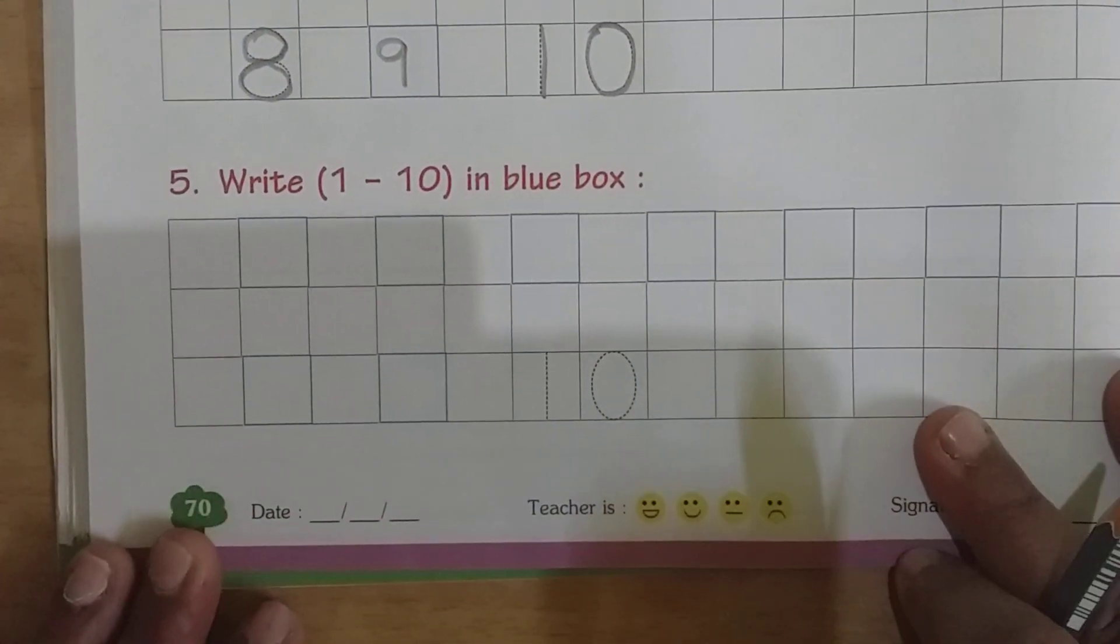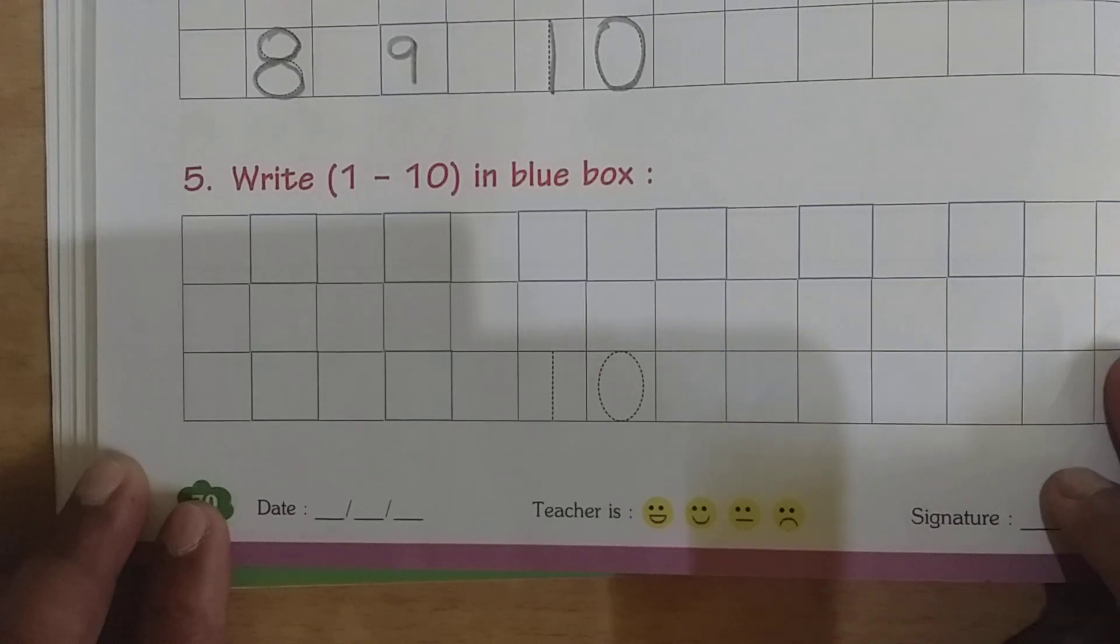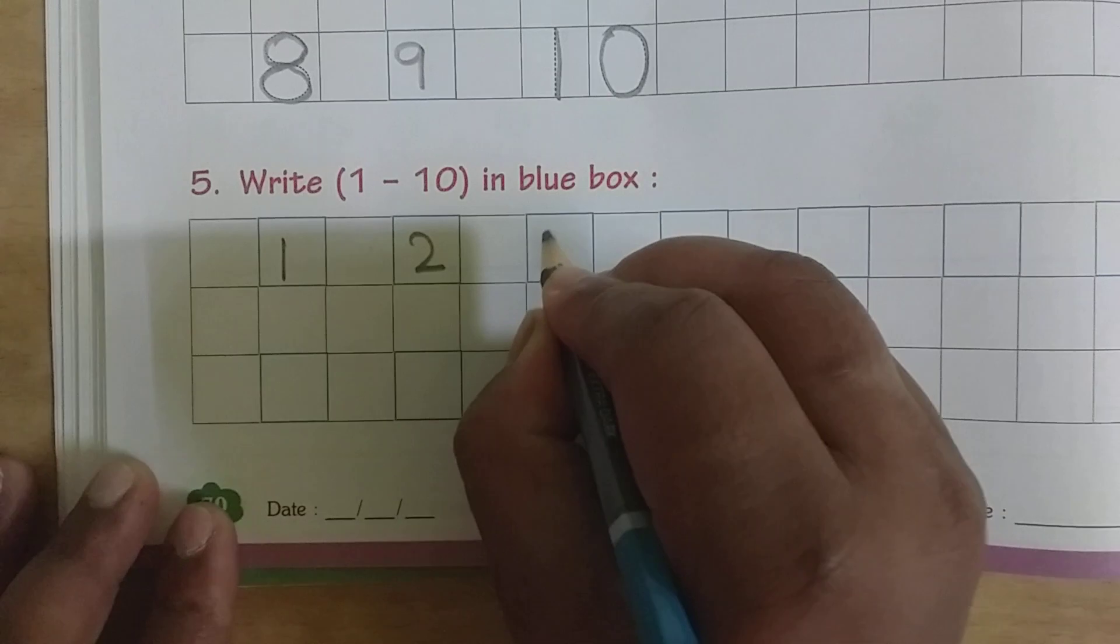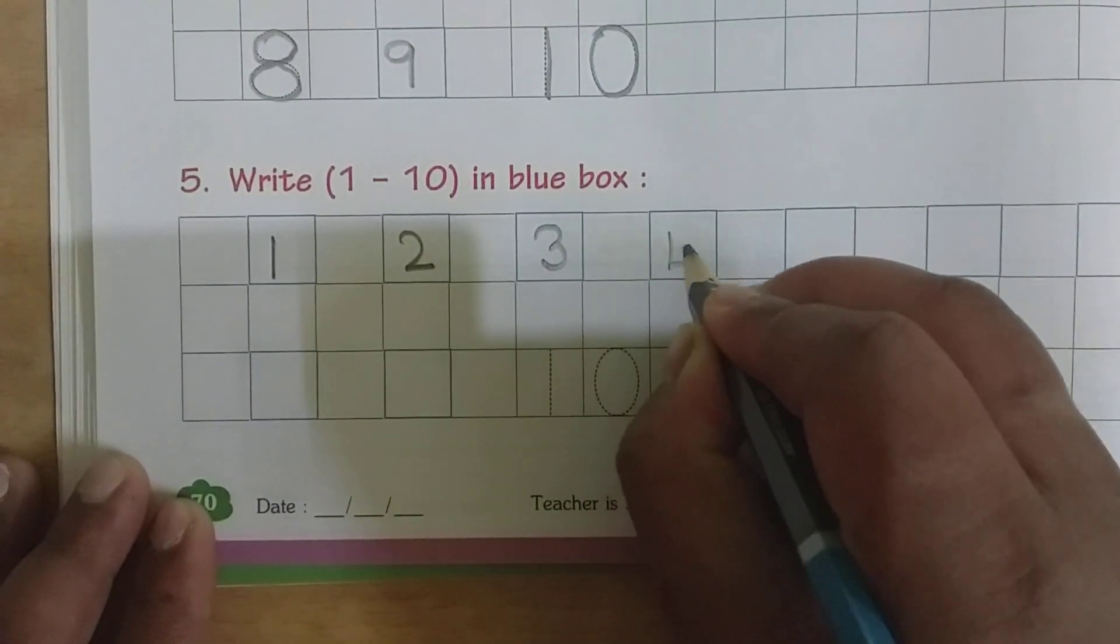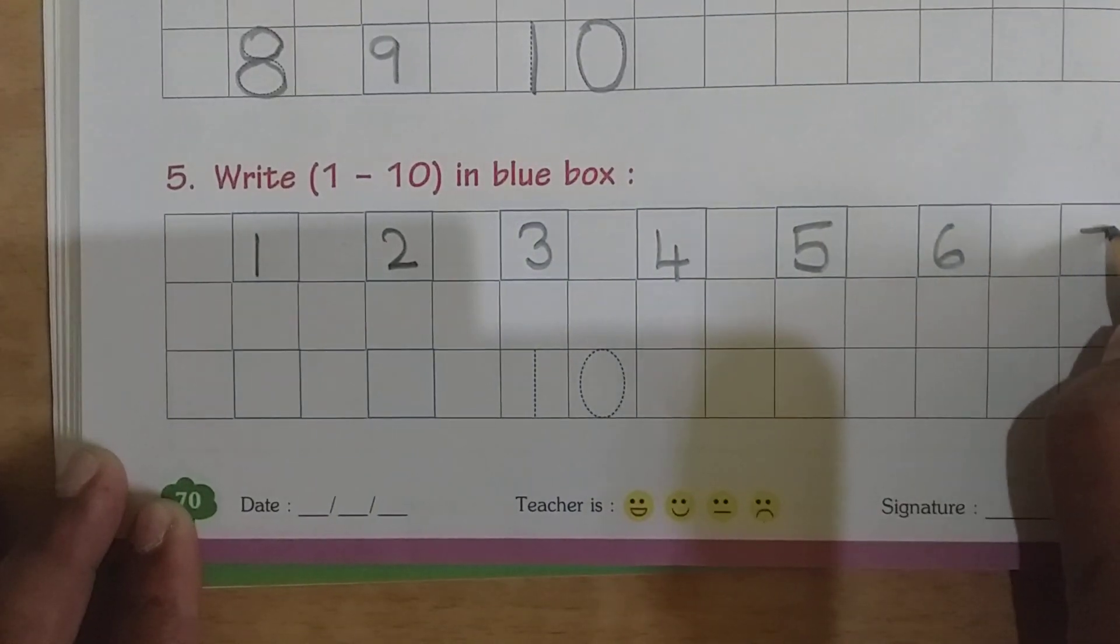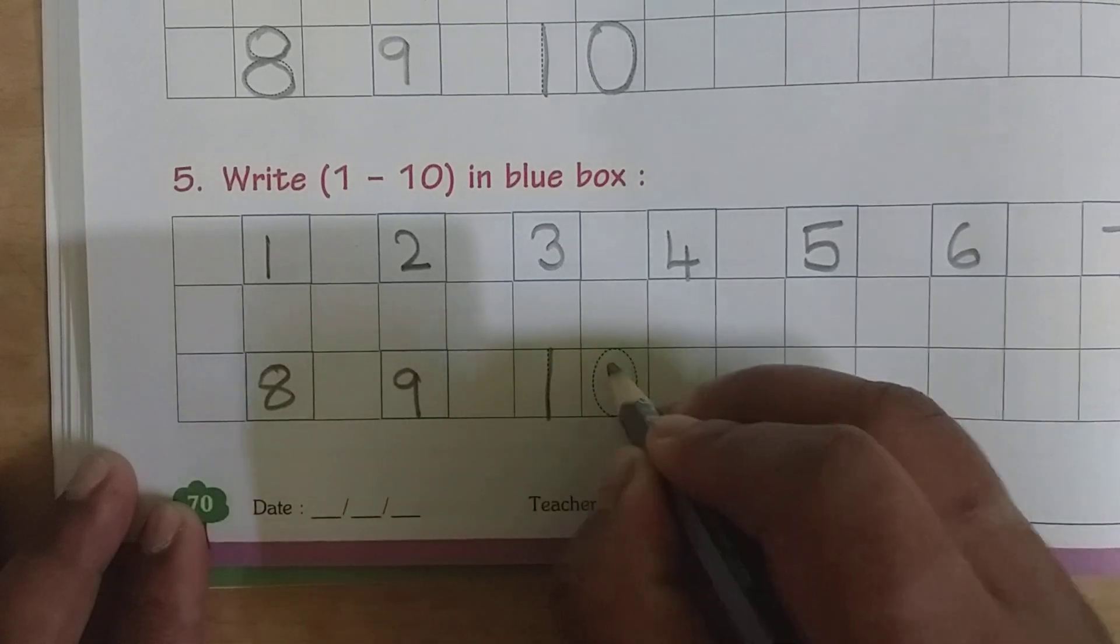Write 1 to 10 in blue box. 1, 2, 3, 4, 5, 6, 7, 8, 9, last 10.